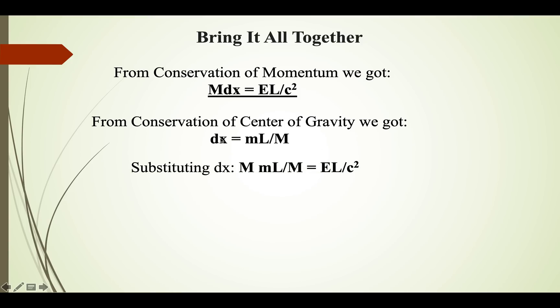Substituting for dx, we get M times mL over M equals EL over c squared. And then from that, this M cancels out with this M, this L cancels out with that L, and you end up with m equals E over c squared. This is the original form of Einstein's equation, but nowadays it's known as E equals mc squared.